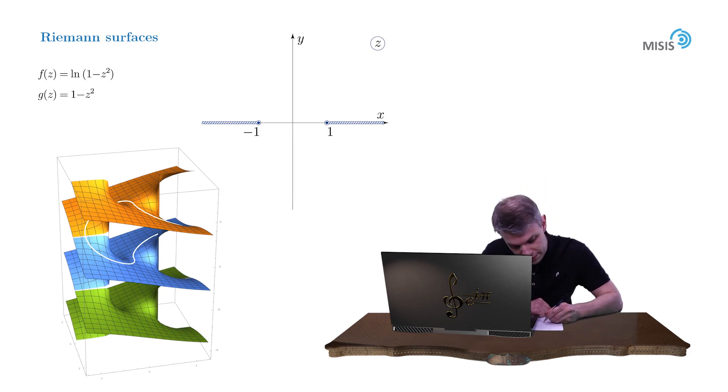So here it is. It starts at the lower bank of the right branch cut and goes to the upper bank of the left branch cut.